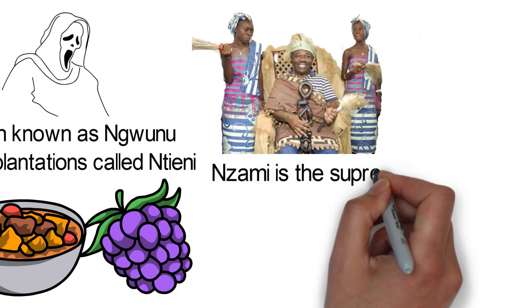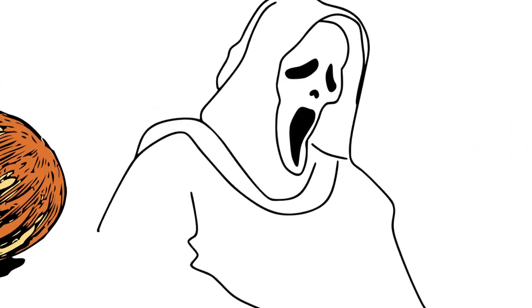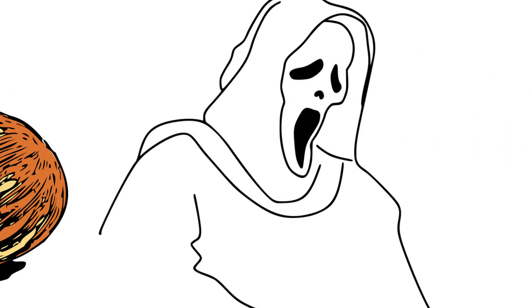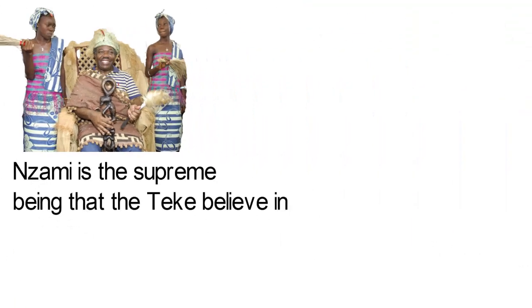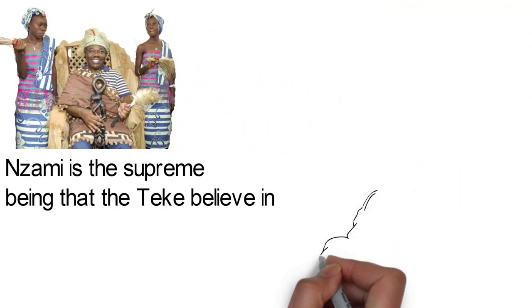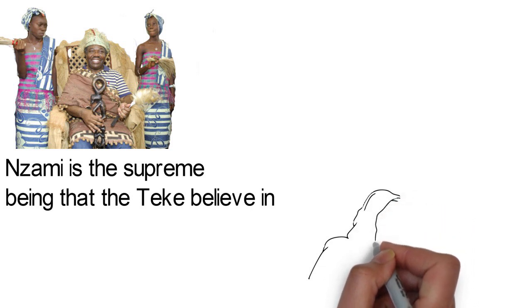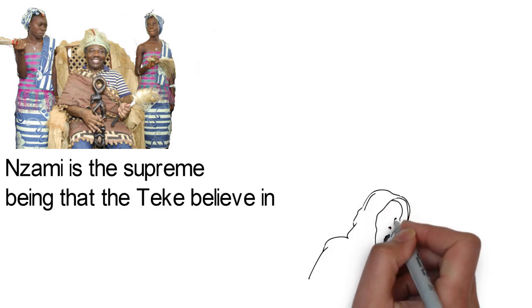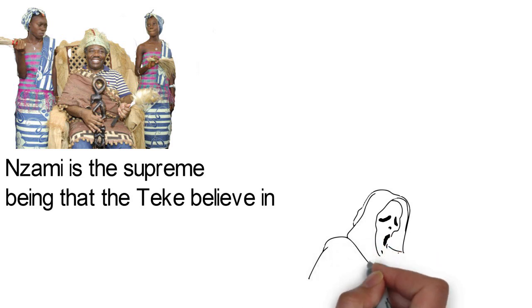Nzami is the supreme being that the Teke believe in. However, they worship spirits of nature under the supervision of a diviner known as Nganga. A person ascends to become an Nganga either by inheriting the position or following a dream. The Nganga usually possesses a statuette which is believed to contain the soul of an ancestor called Tamakui.